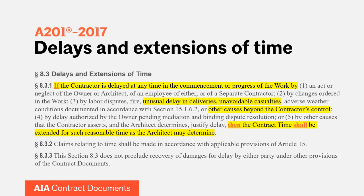An important nuance: some contractors may misunderstand when the architect becomes involved in delay claims. Under subsection 3 of 8.3.1, the contract time is already going to be extended at the time the architect becomes involved. The architect comes in to determine the quantum — how long — not the entitlement. Entitlement is already determined if the contractor is delayed. Subsection 5 is a much broader catch-all: 'other causes that the contractor asserts and the architect determines justified delay.' Under subsection 5, the architect has to get involved earlier to actually determine whether the contractor's arguments justify a delay.